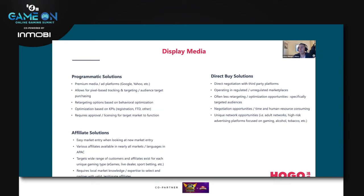For example, if we want to optimize based on registrations to a particular iGaming platform, when we install tracking pixels through these programmatic solutions, we're able to run across various networks based on targeting — age, gender, interests, other brands these people follow — drilling that audience down very specifically. We'll then be able to see where registrations or first-time deposits (FTDs) are coming from and optimize our advertising spend more on the solutions driving return on investment.